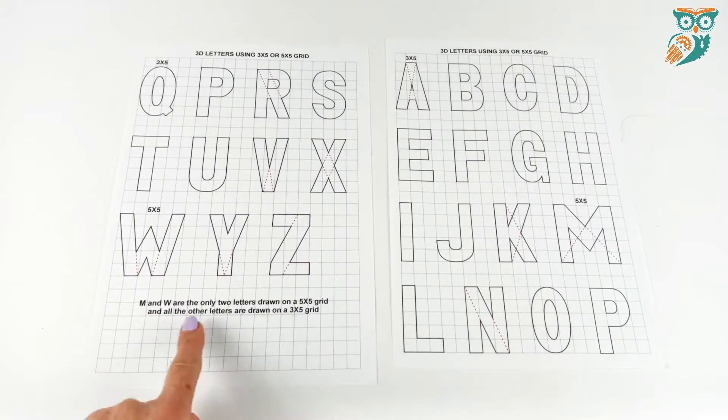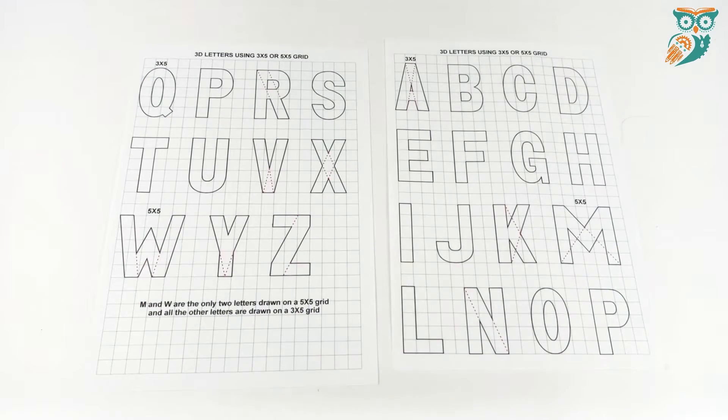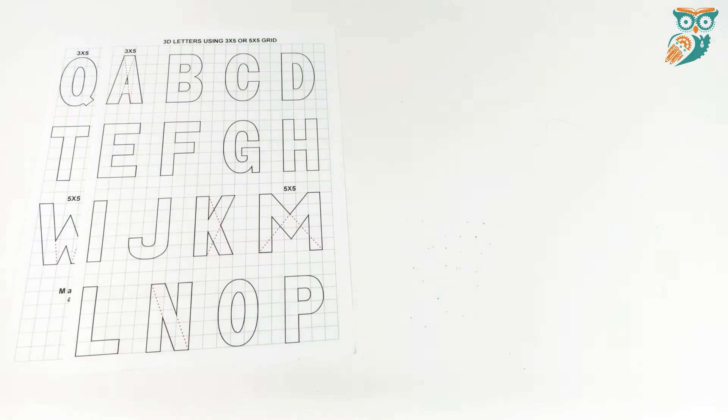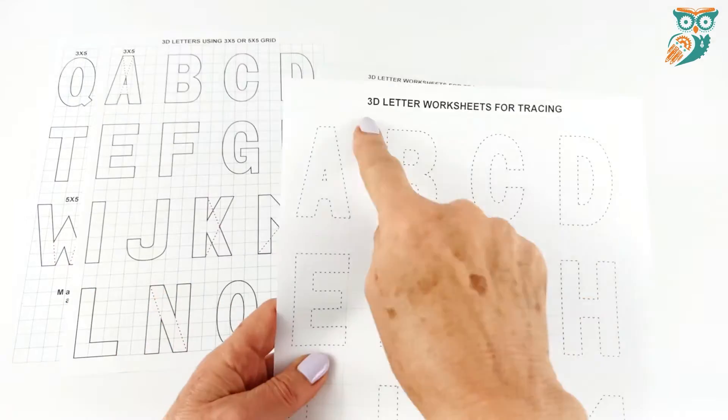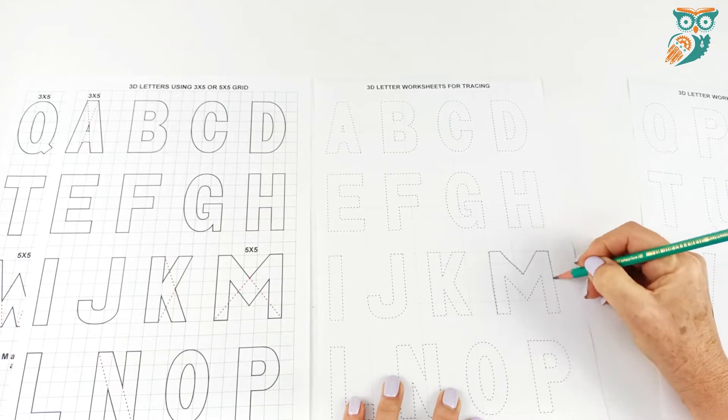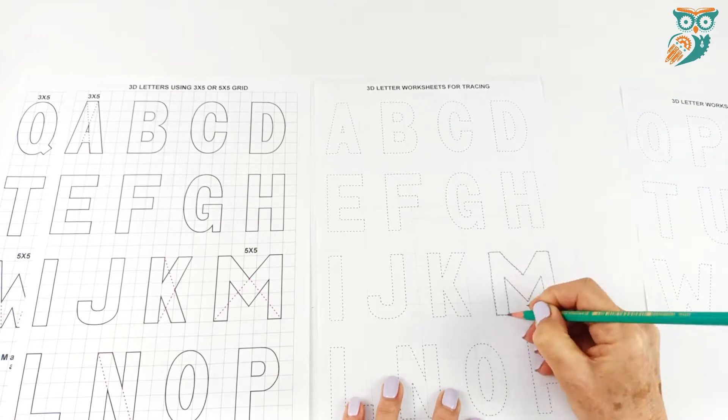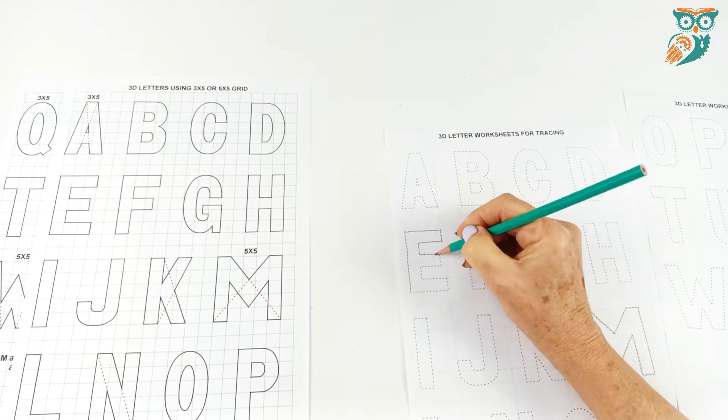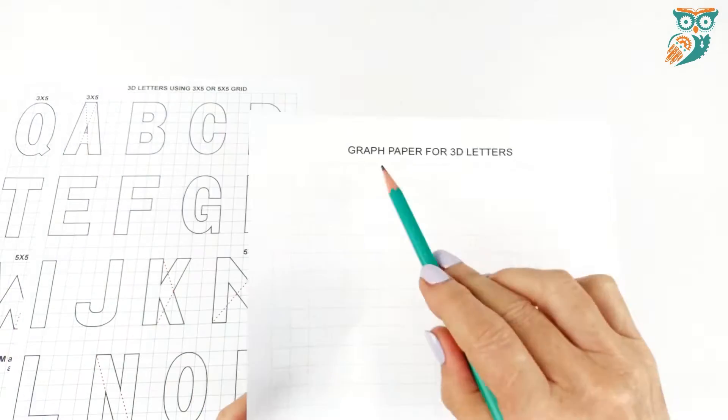Next we're gonna learn how to draw some letters in 3D. And the first thing we need to learn in this is how to make block letters. One of the easiest ways to do this for new artists is to use grid paper. So we're just showing you how to use grid paper in our templates to create your block letters.